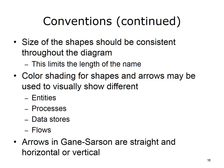Today, color may be used to visually show different types of entities, processes, data stores, or flows. Arrows in Gane-Sarson are straight and horizontal or vertical — no diagonal or curved arrow lines. Double-headed arrows can be used instead of two separate arrows in opposite directions, such as to represent request and reply.